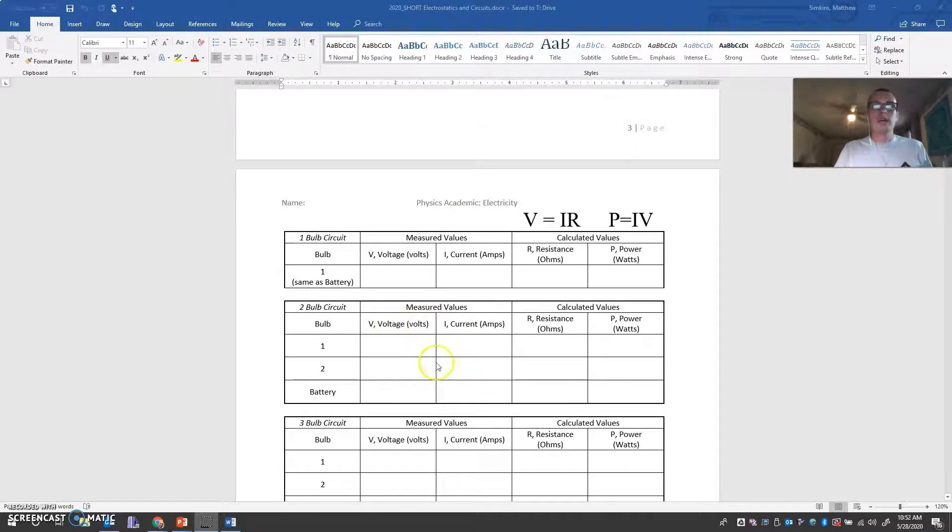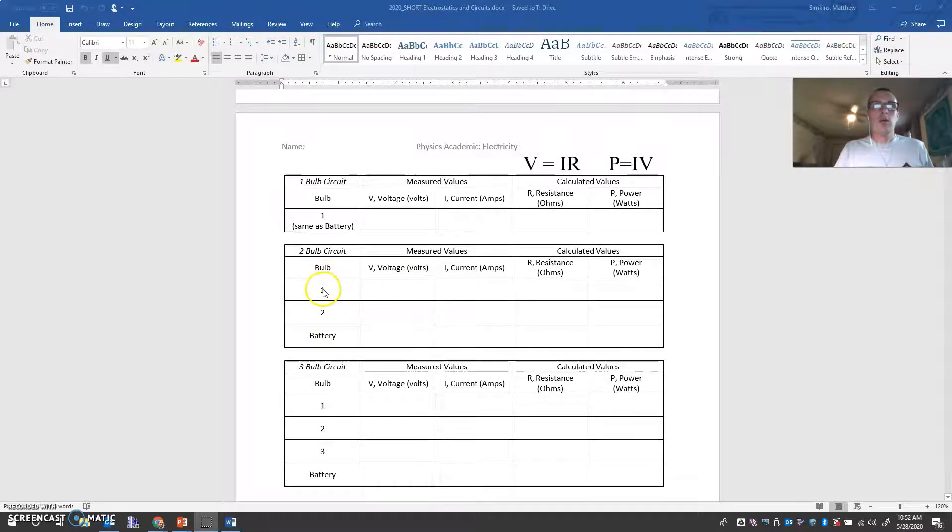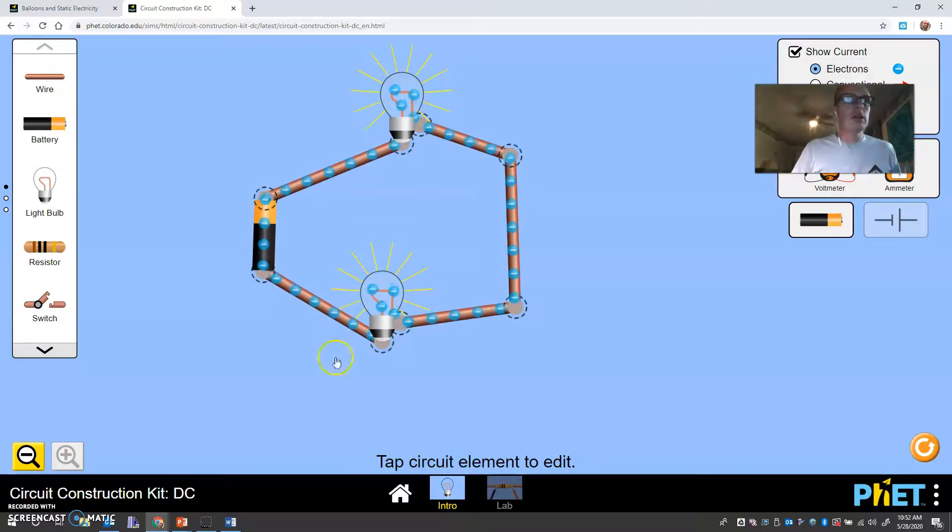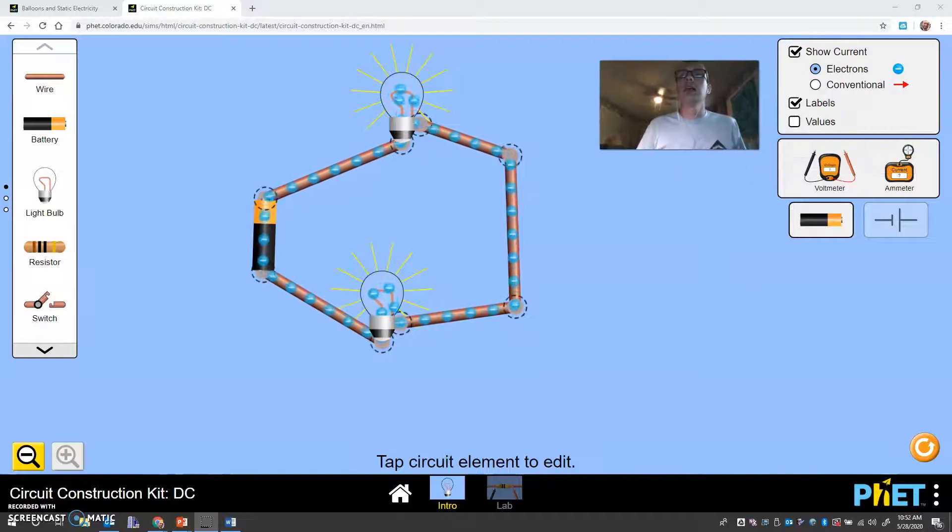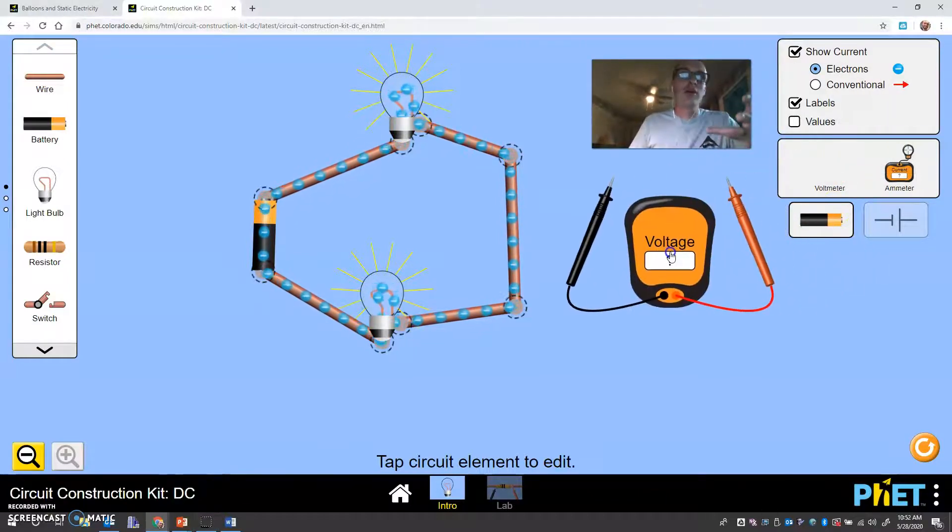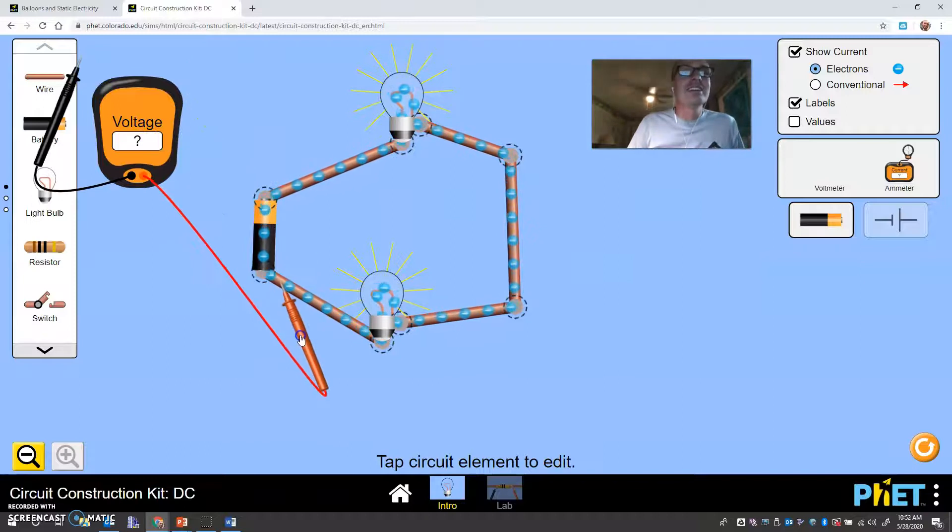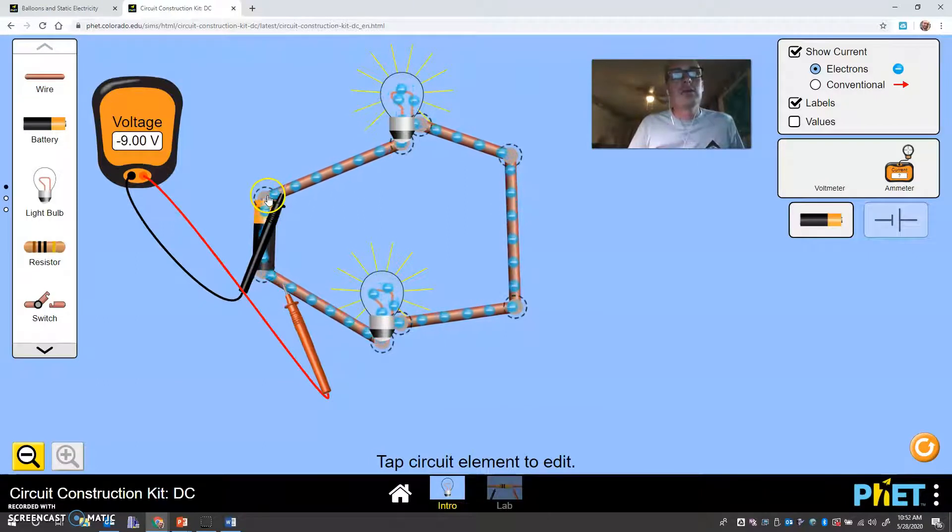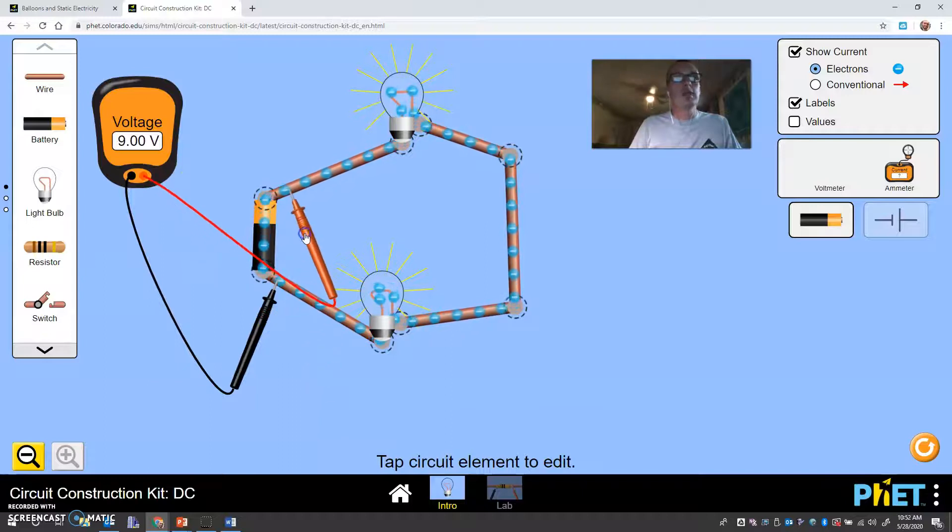So now what I need to do is measure the volts and the current at bulb one, bulb two, and the battery. So let me show you how you measure volts and amps. You measure volts with a voltmeter. Imagine that. You're going to take the red side and the black side, and you're going to put the black side on one side of what you want to measure. In this case, the battery, this is where we mean by the entire circuit. And the red is on the other side. Now, the first thing you notice is that the voltage is negative. If you get a negative number, just switch the black and red leads. And look, now we have nine volts. Pretty cool. So at the battery, we have nine volts.